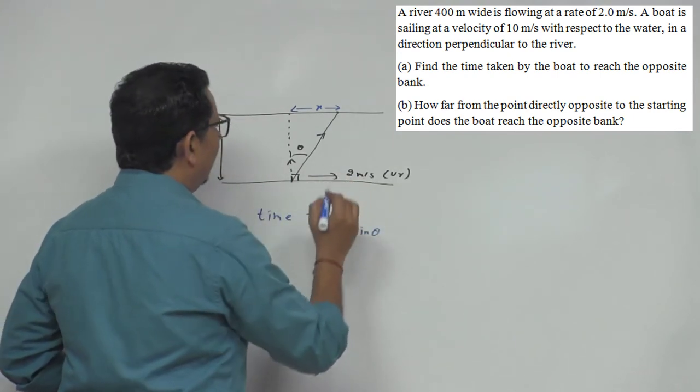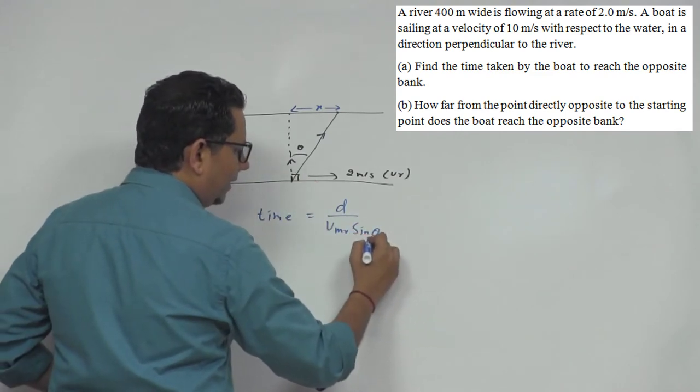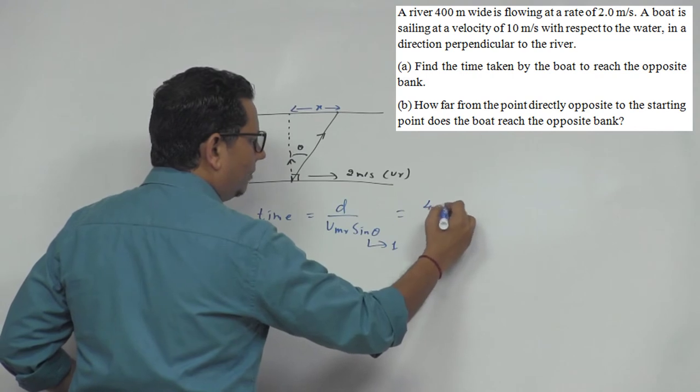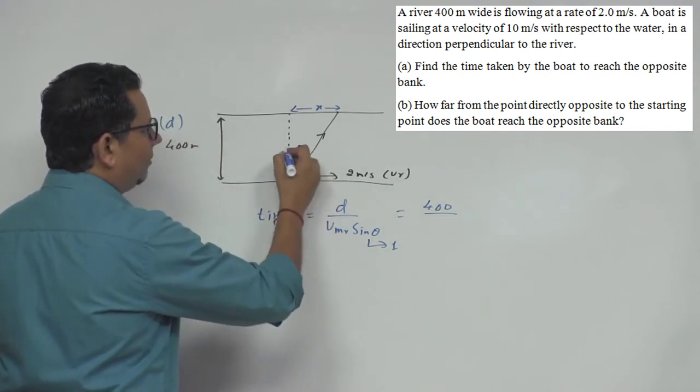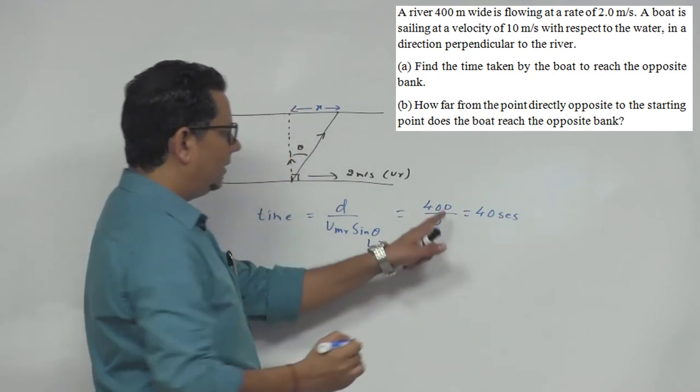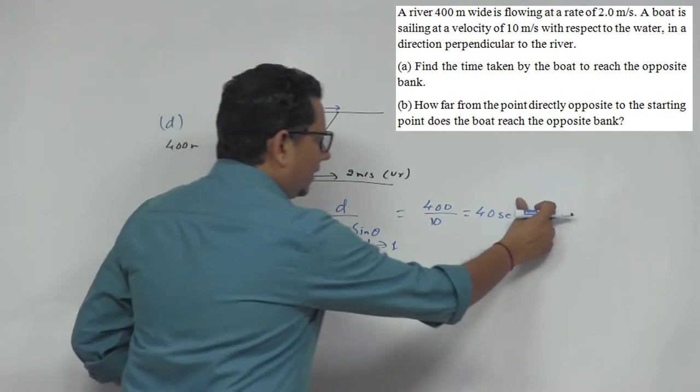The time formula is D divided by VmR sin theta. In this case, because theta is 90 degrees, sin theta is 1. So this will be D, or 400 meters, divided by VmR, which is 10. So this equals 40 seconds.